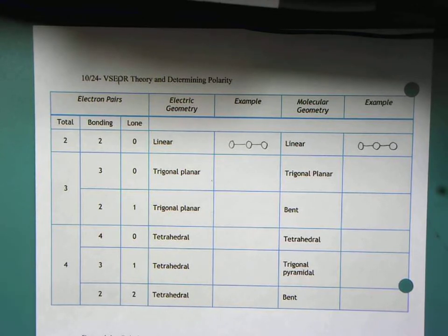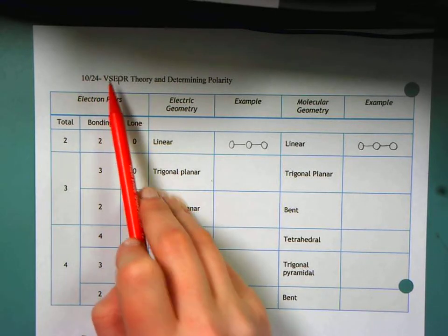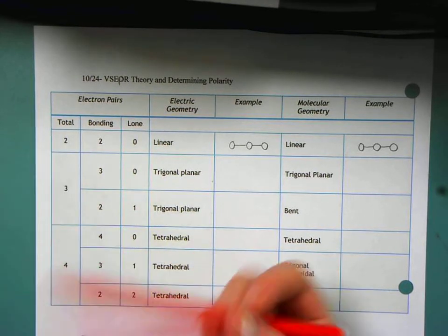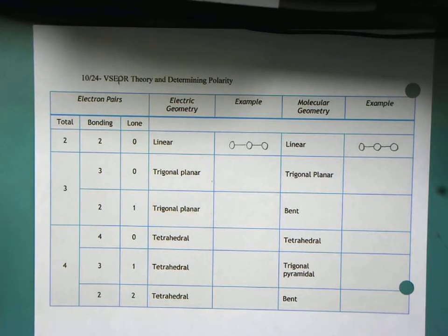So VSEPR, valence shell electron pair repulsion theory, is what VSEPR stands for. We're going to actually look at some of the different electric geometries and the molecular geometries.